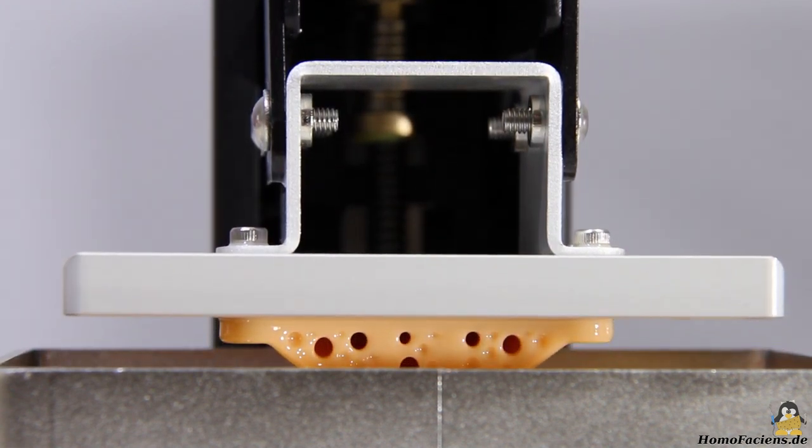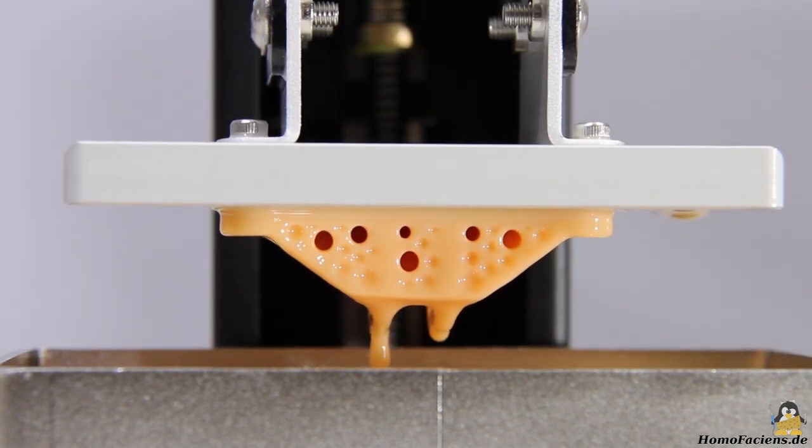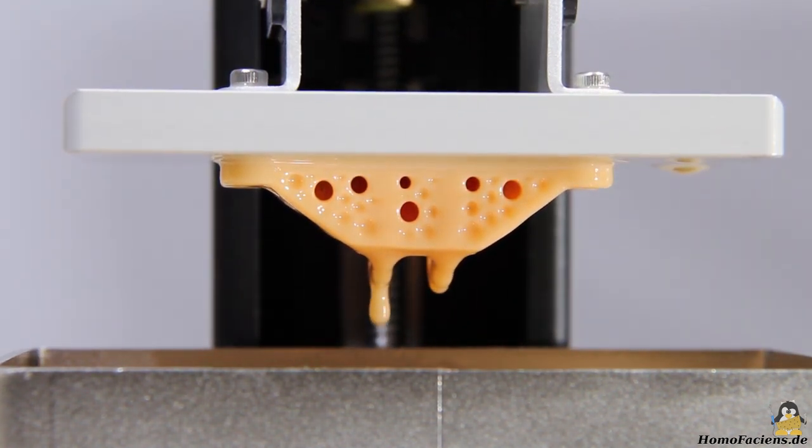During printing, the object grows layer by layer being pulled out of the resin tank. As can be seen, the print is created upside down.